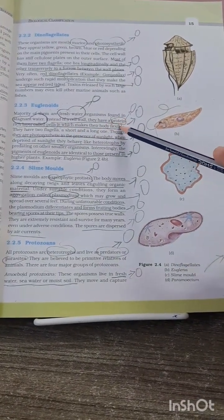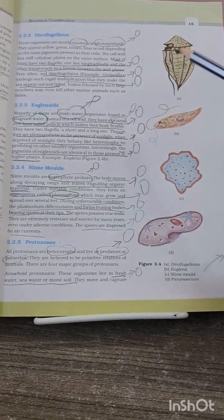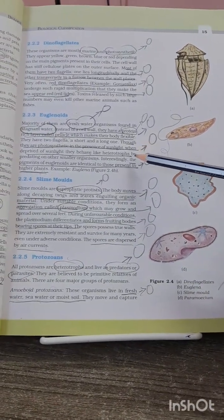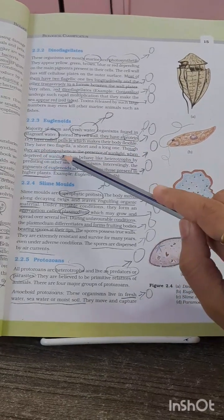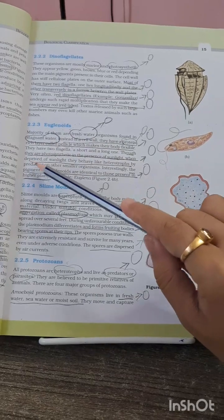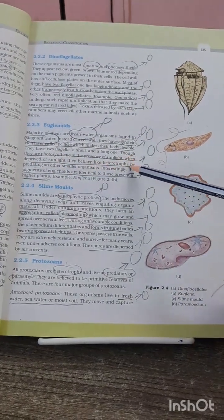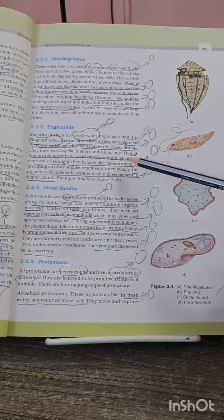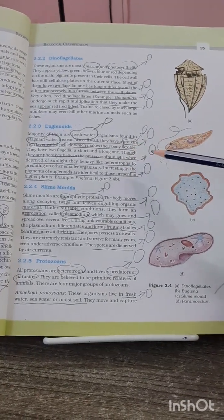Now another MCQ about a unique feature of euglenoids is that though they are photosynthetic in presence of sunlight, when deprived of sunlight they become heterotrophic. This is an important MCQ because it is a unique feature.